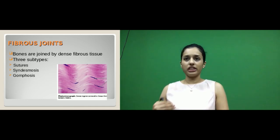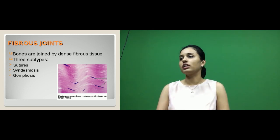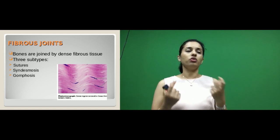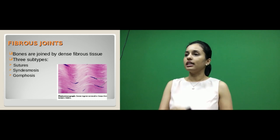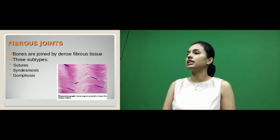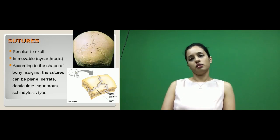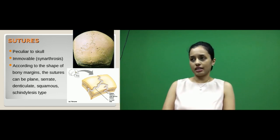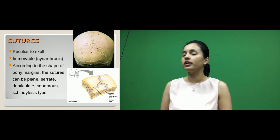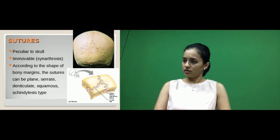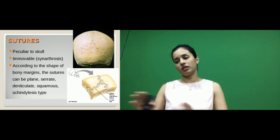Let us look at each type. Fibrous joints — the name tells you they are made up of dense connective tissue, a fibrous tissue. Under that there are three subtypes: sutures, syndesmosis, and gomphosis. Sutures are peculiarly present in the skull — you know the names: coronal, sagittal, lambdoid. These sutures come under fibrous joints and are totally immovable, classified under synarthrosis.